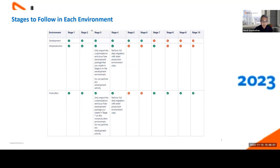Stage four is data migration: you'll practice once in dev, then migrate data in non-prod and production environments, bringing in newer data each time. Stage five is unit testing; stage six is delta migration, which you'll practice in the development environment. Stage seven is UAT, performed in non-production environments like QA, SIT, and pre-prod, and also in production. After stage seven, focus only on production to continue your UAT cycle, sign off, run final data migrations, cumulative cutover, and go live.